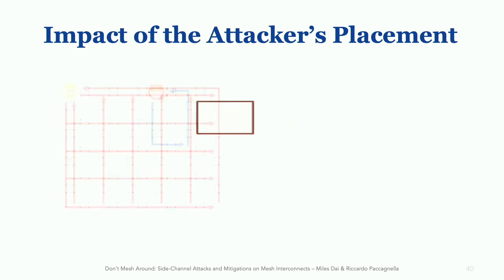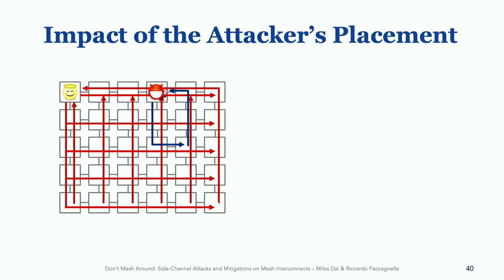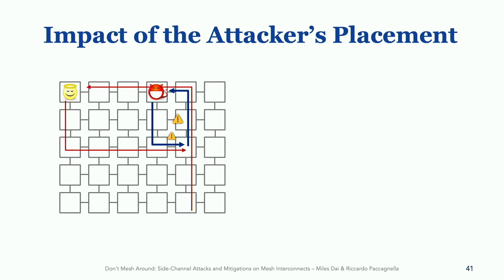The model returns a normalized score from 0 to 10, where 10 is the best score we ever saw on our processor, and 0 means that the attacker and victim share no links, so the attacker will not be able to observe any contention. Here is an example with the attacker running on the fourth row, first column, and the victim still in the same position. Of all the victim's flows shown in red, only a small subset are observable by the attacker in this placement — making it not a particularly good placement. It achieves a low score.